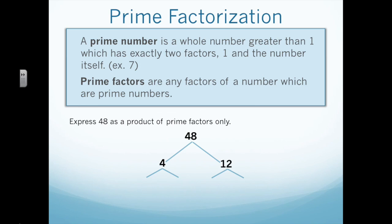Both of these numbers are composite numbers, meaning they can be broken down further. So, I'm going to break 4 down into 2 times 2. Notice those are both shown in red, because those are both prime numbers now — 2 cannot be broken down any further, since it can only be divided by itself and 1. 12 can be divided by 3 and 4; 3 times 4 equals 12. 3 is a prime number, so I stop that one there. 4 is not, so I continue to break 4 down into 2 times 2. Now I have all prime numbers at the bottom of the tree. In class, we normally put circles around our prime factors at the bottom so we know we're done and don't have to break it down any further.